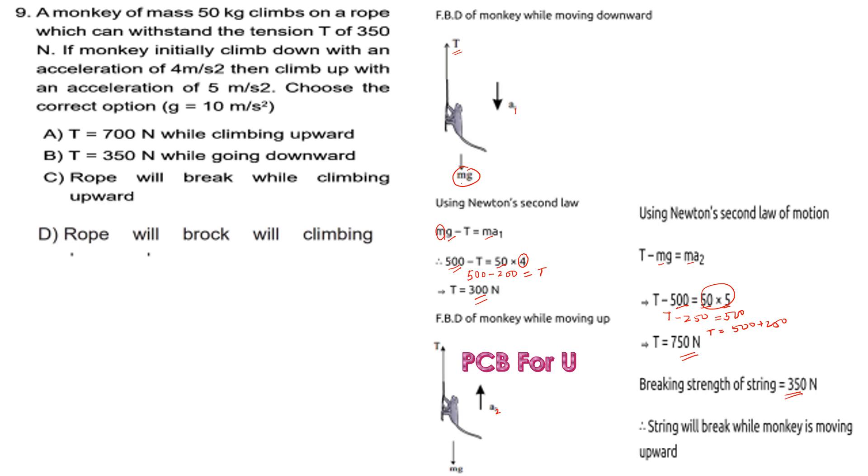So we have 500 plus 250, which gives us 750 Newtons. The breaking strength of the string is 350 N, so the string will break while the monkey is moving upward. The rope will break while climbing upward, so option C is correct.